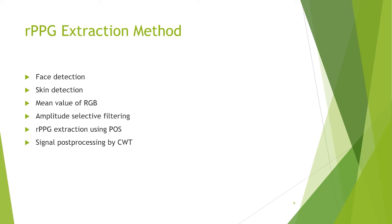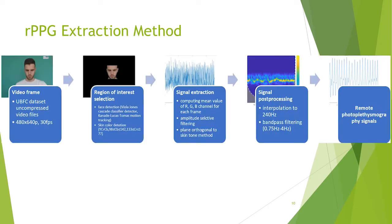This is our RPG extraction method, which contains multiple algorithms. First, the region of interest is selected by the face detection algorithm using Viola-Jones detection and KLT for motion tracking. After the face detection algorithm locates the face in a rectangular bounding box, the skin detection algorithm is applied to the region of interest to select skin pixels in the YCrCb color space. After skin pixels are selected, the mean value of the RGB channels of each frame is calculated to form a series of raw RGB channel signals.